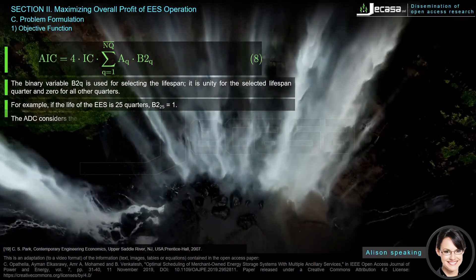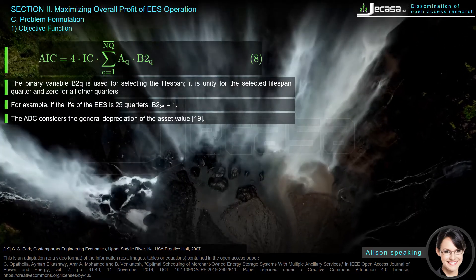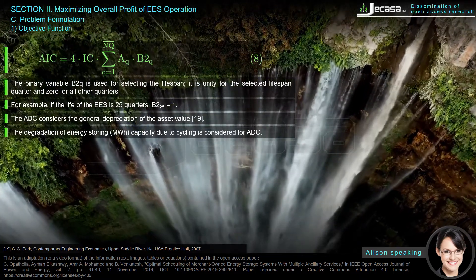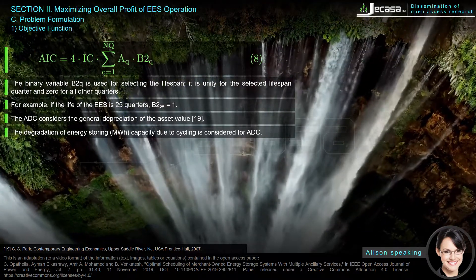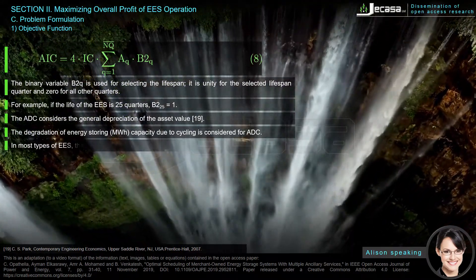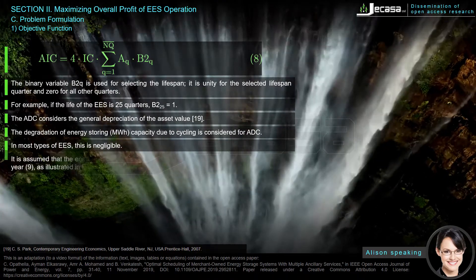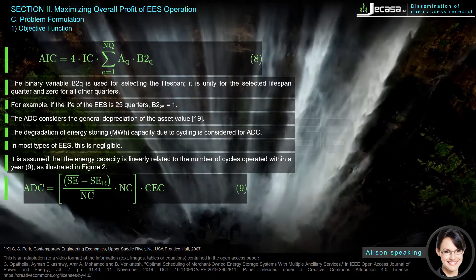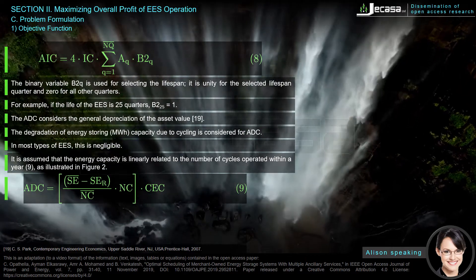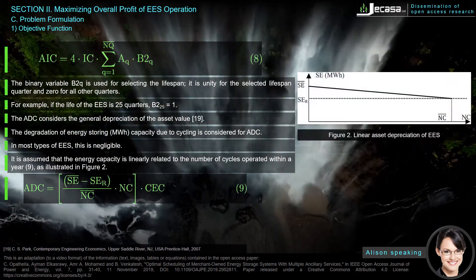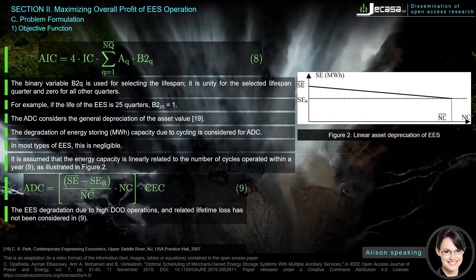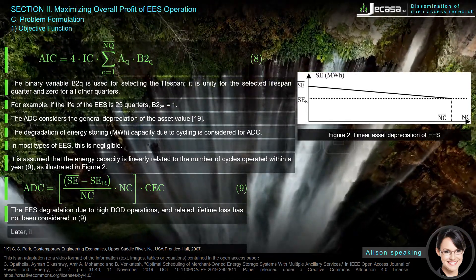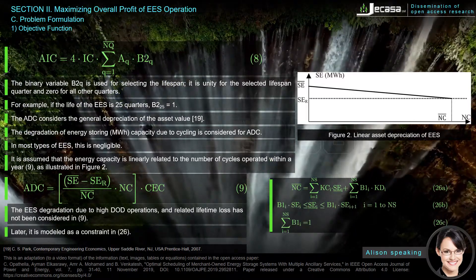The ADC considers the general depreciation of the asset value. The degradation of energy storing megawatt-hours capacity due to cycling is considered for ADC. In most types of EES, this is negligible. It is assumed that the energy capacity is linearly related to the number of cycles operated within a year in equation (9), as illustrated in Figure 2. EES degradation due to high DOD operations and related lifetime loss has not been considered in (9). Later, it is modeled as a constraint in (26).